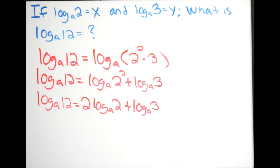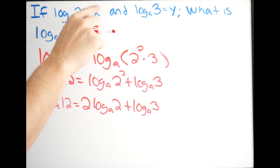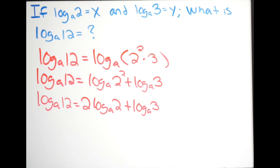And you're pretty much done at this point, you just want to simplify it even further and you want to write it in terms of x and y. So log base a of 2 is equal to x, log base a of 3 is equal to y. So what I'm going to do is simply just rewrite my final answer like this. So log base a of 12 is equal to 2, again log base a of 2 is equal to x, so I'm just going to put x here, plus log base a of 3 is equal to y, so I'll just put y. So plus y.